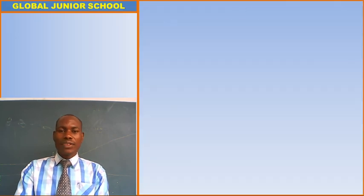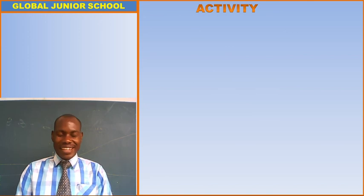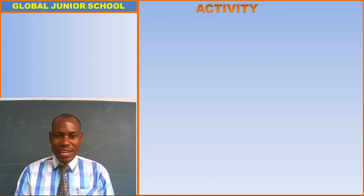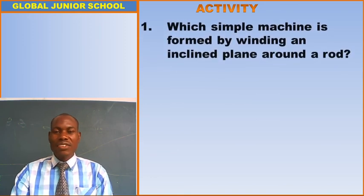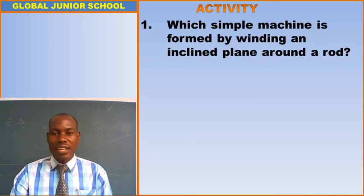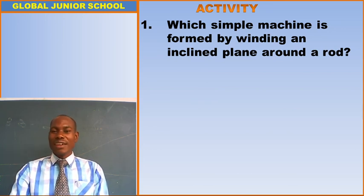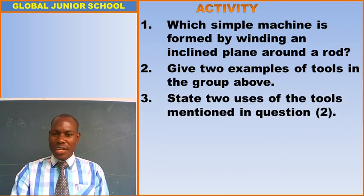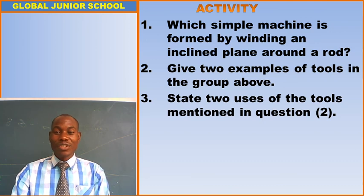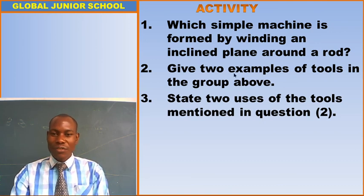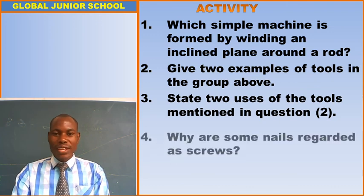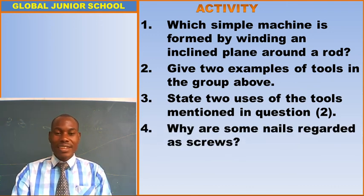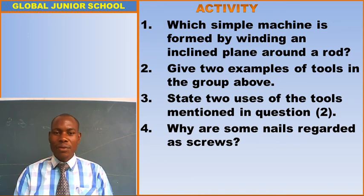Now we have an activity. After looking at screws in detail and learning the uses, here are the questions: Which simple machine is formed by winding an inclined plane around a rod? Give two examples of tools in that group. State two uses of the tools mentioned in question two. And why are some nails regarded as screws?